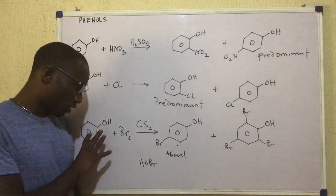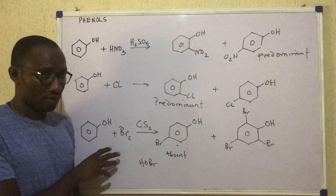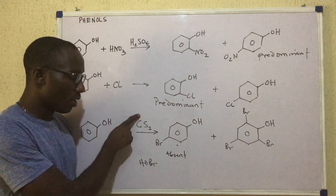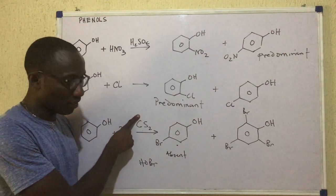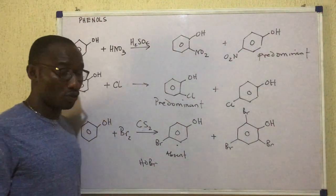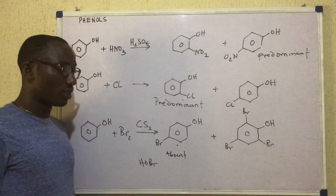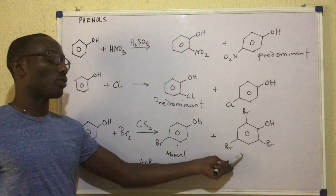So for the reaction between phenol and bromine, what determines your product formation would be whether you are using carbon disulfide, in which case you have these two. Or you are using HOBr, bromine water, in which case you have that only.